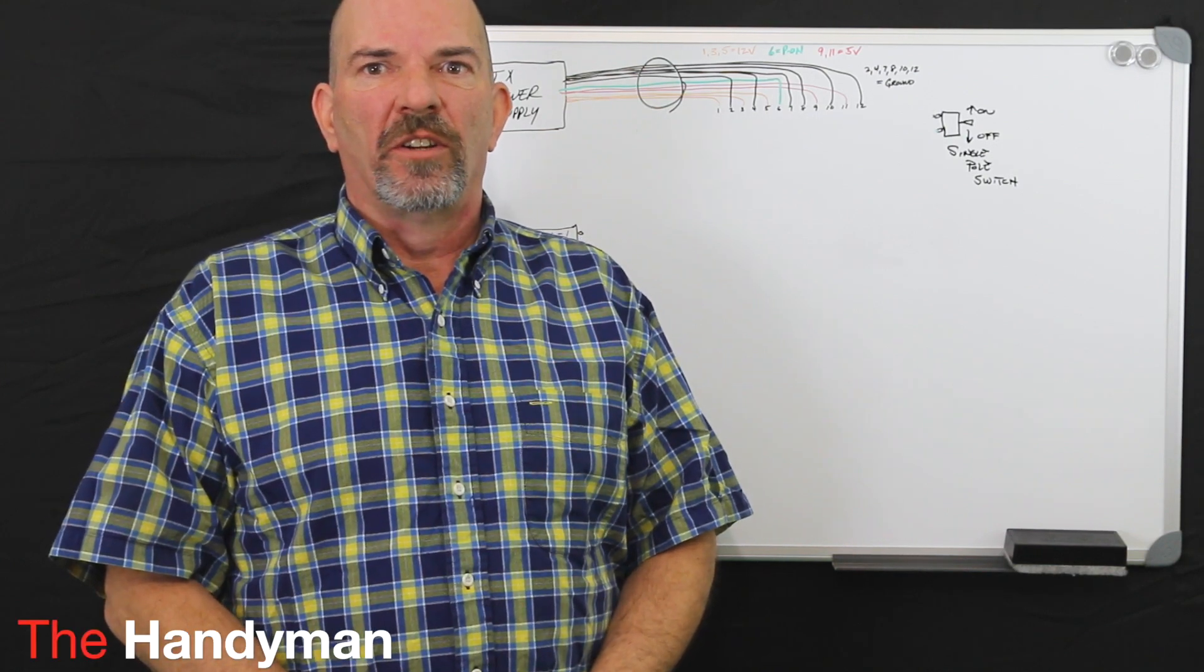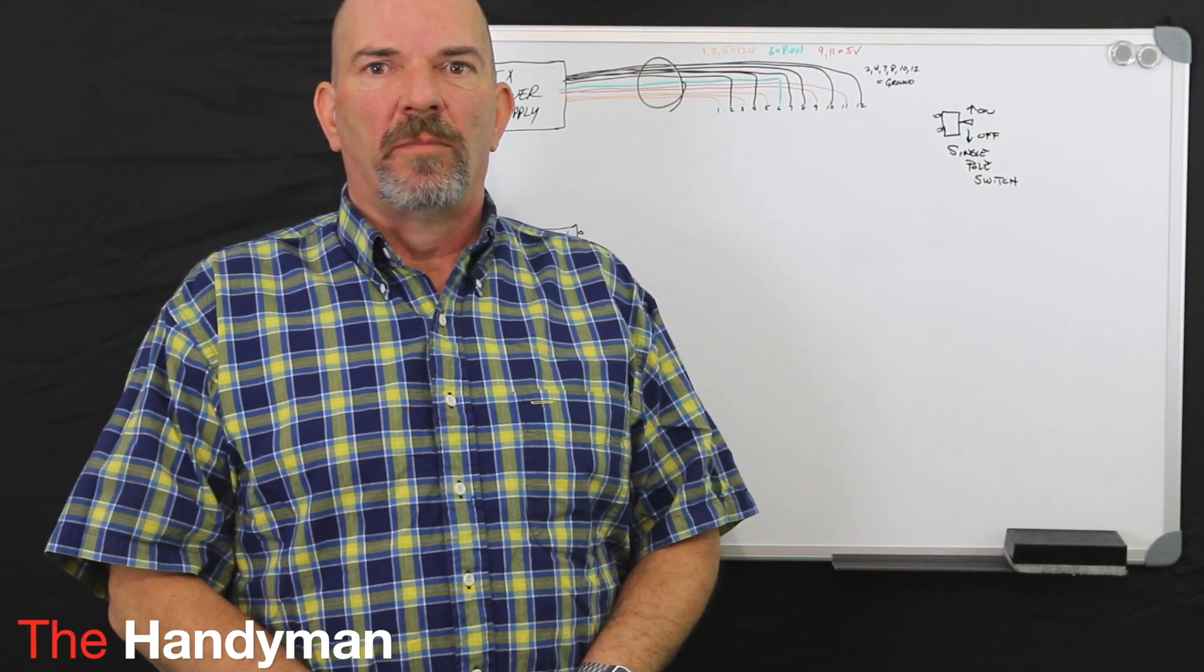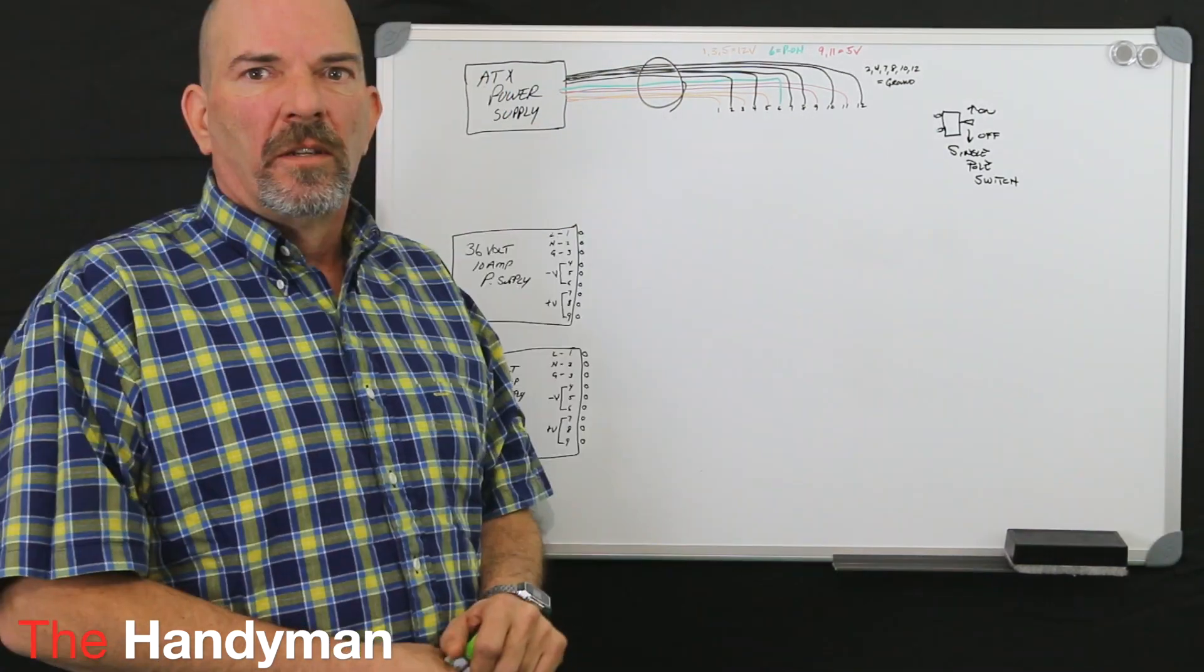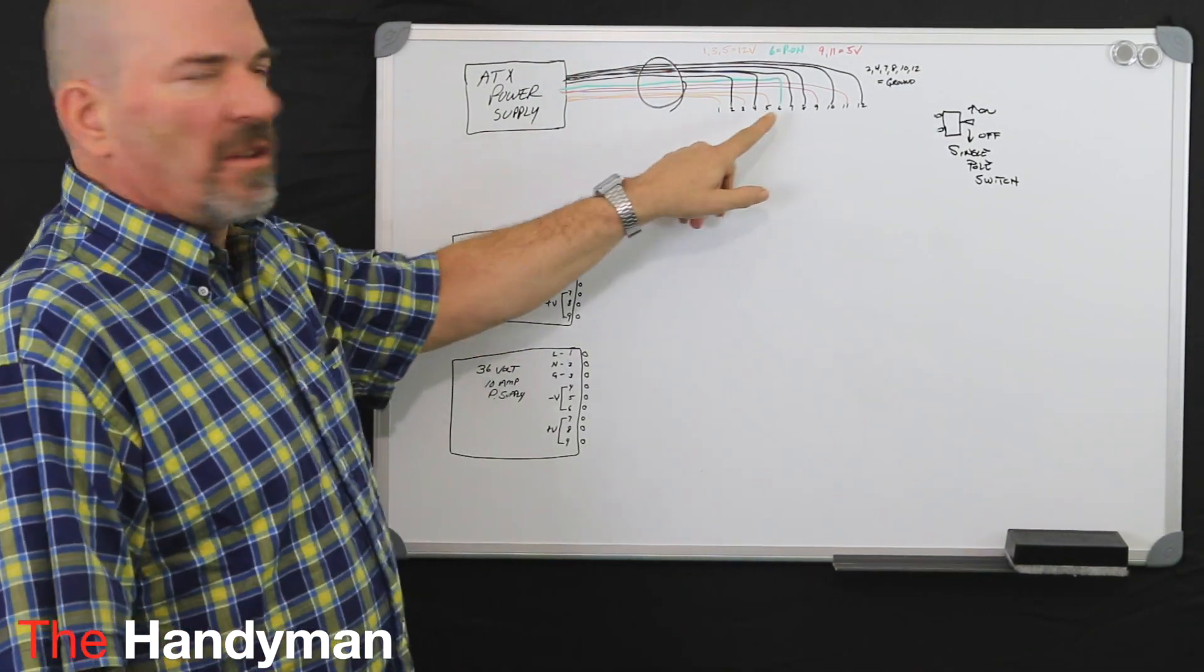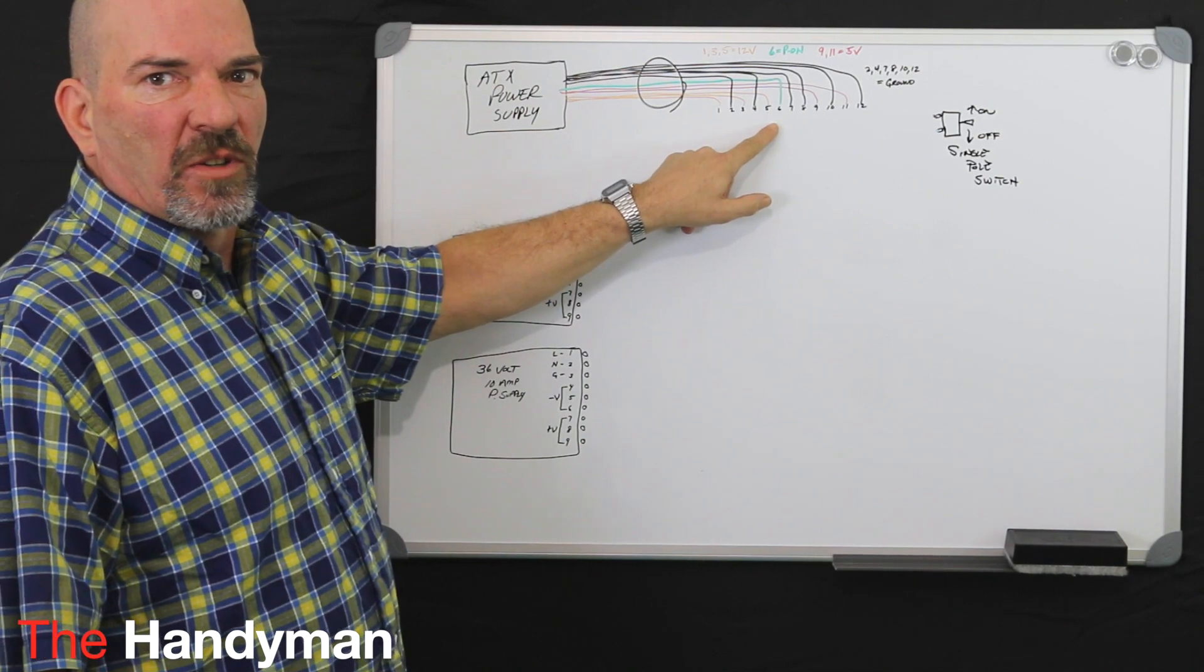Hi and welcome to part two of building your own CNC router control box. To recap part one real quick, you should have cut all the ends off your wires coming out of your power supply.